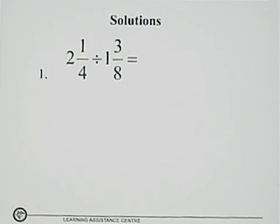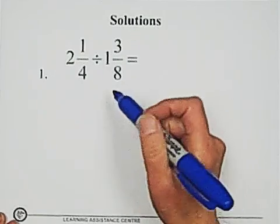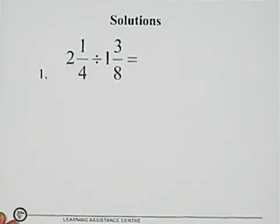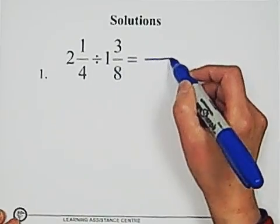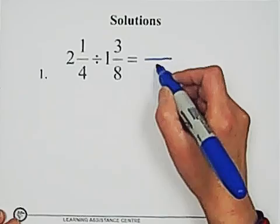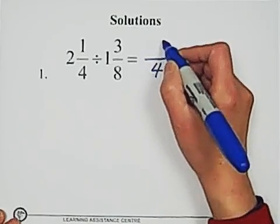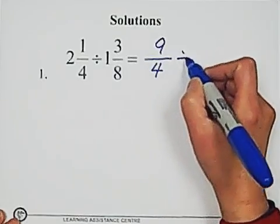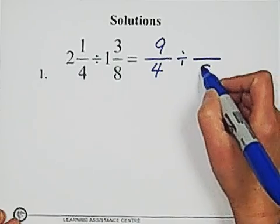Solutions. 2 and 1 quarter divided 1 and 3 over 8. First step, change the mixed number to improper fraction, 9 over 4 divided 11 over 8.